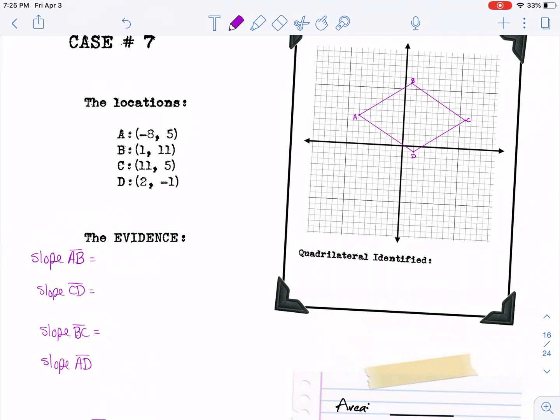So I've already plotted these points, and to look at it, it kind of looks like it might be a rhombus, at least it looks like a parallelogram. So let's determine first if it is indeed a parallelogram by finding the slopes of all four of the sides.